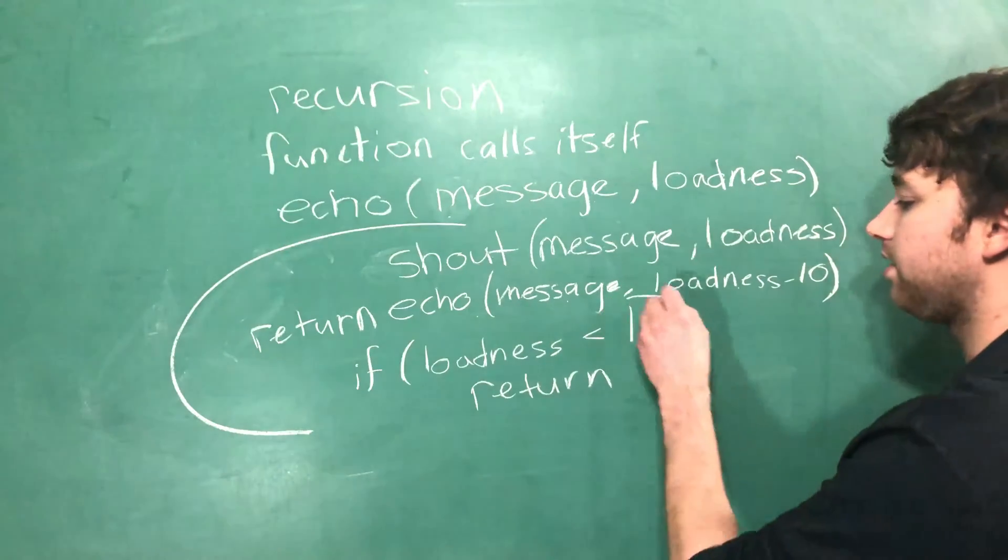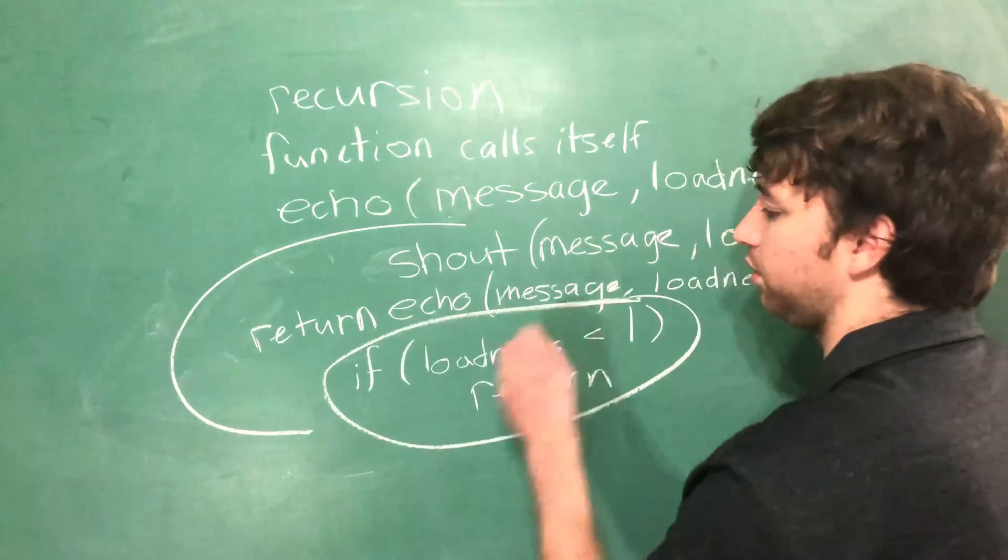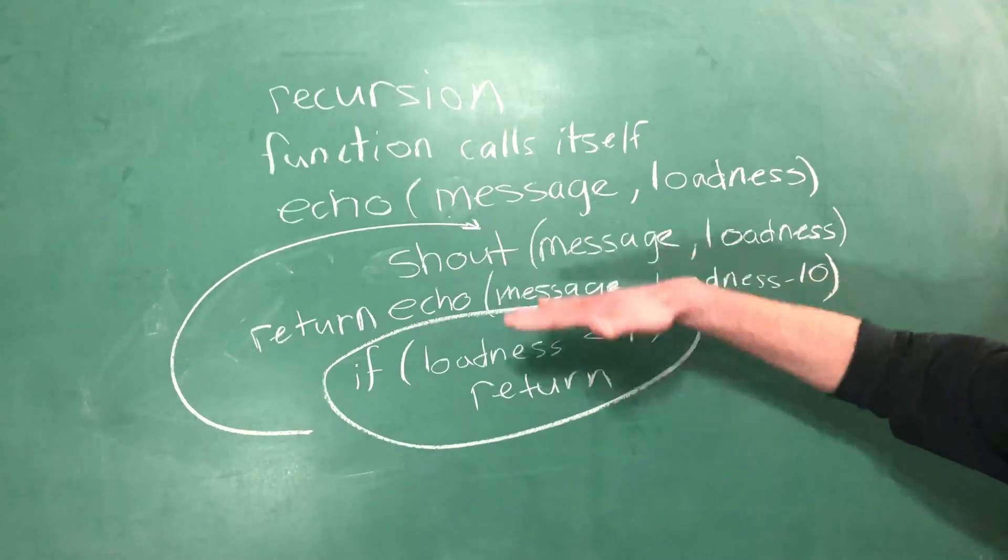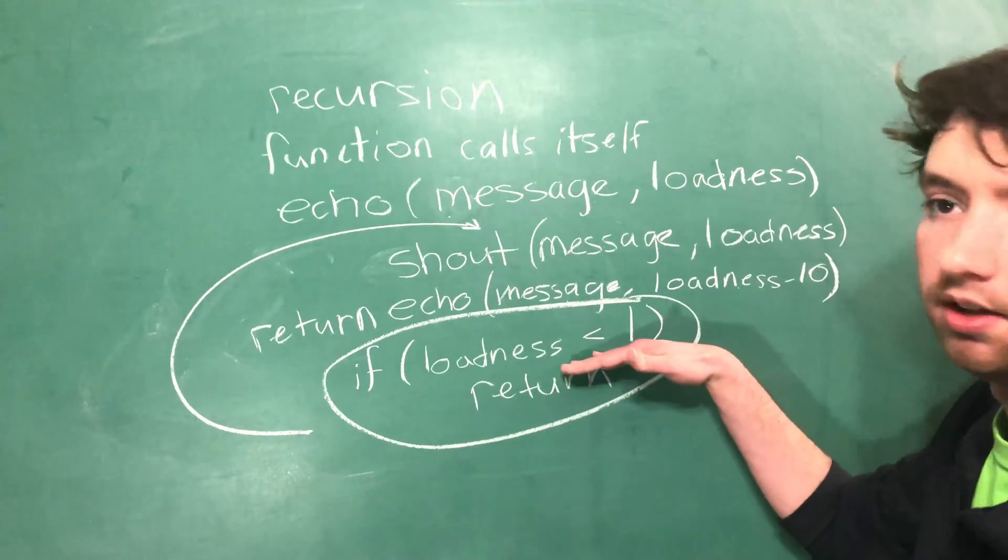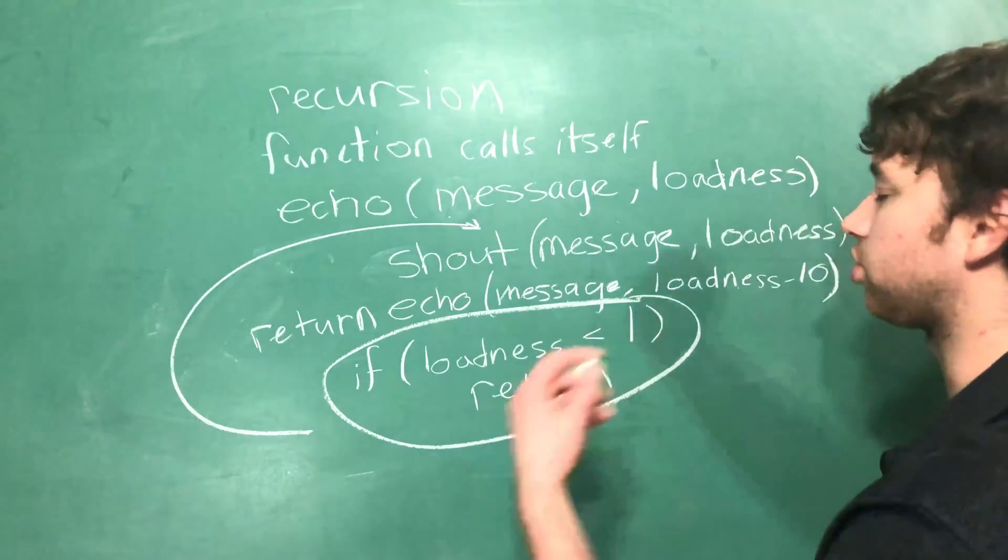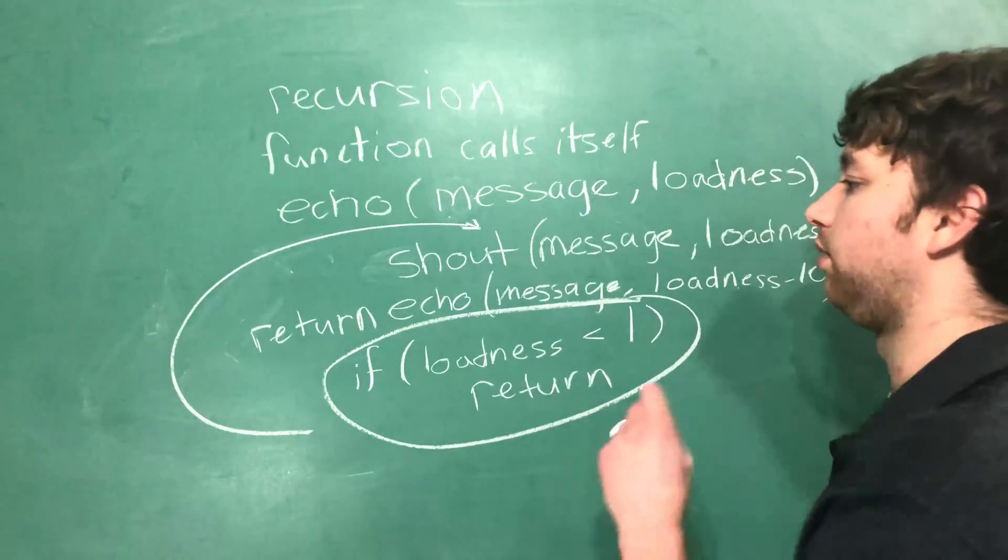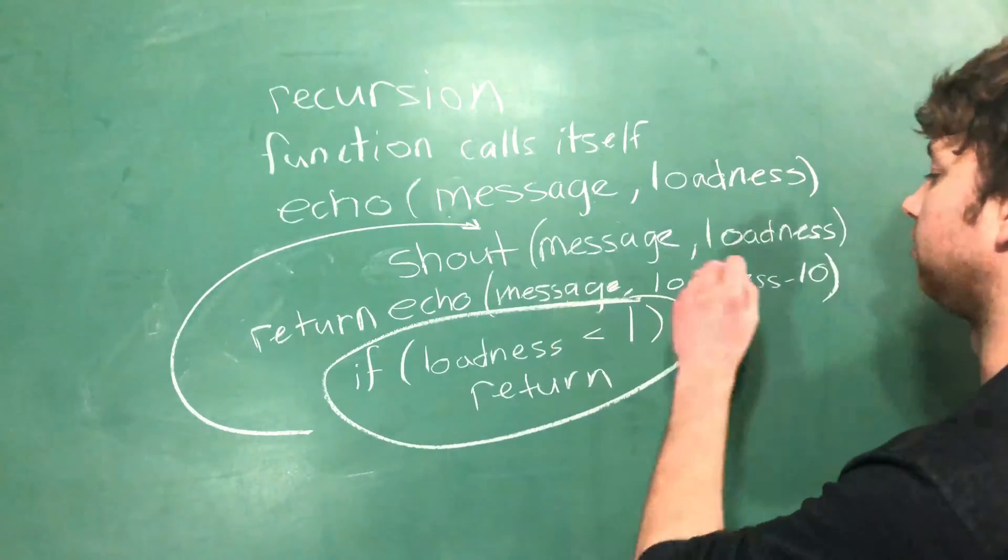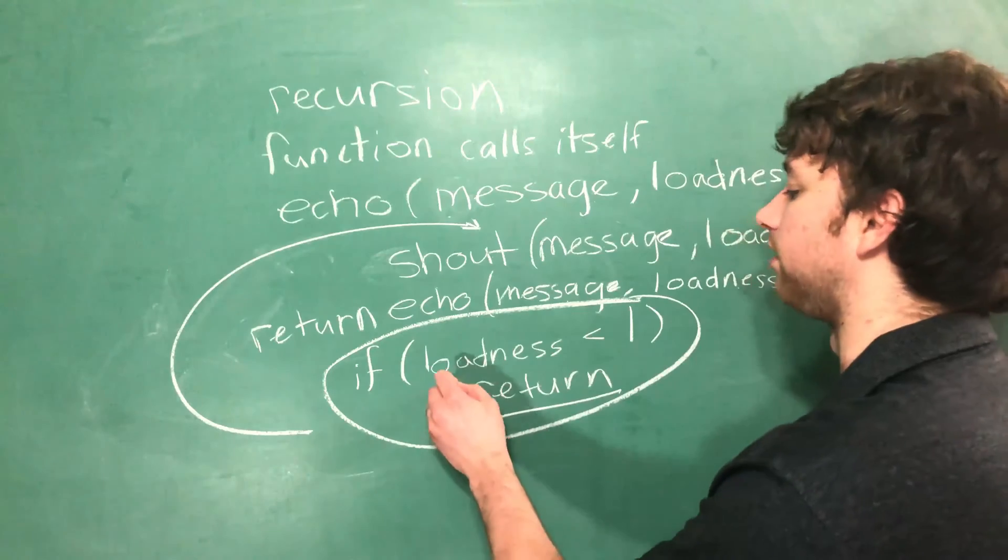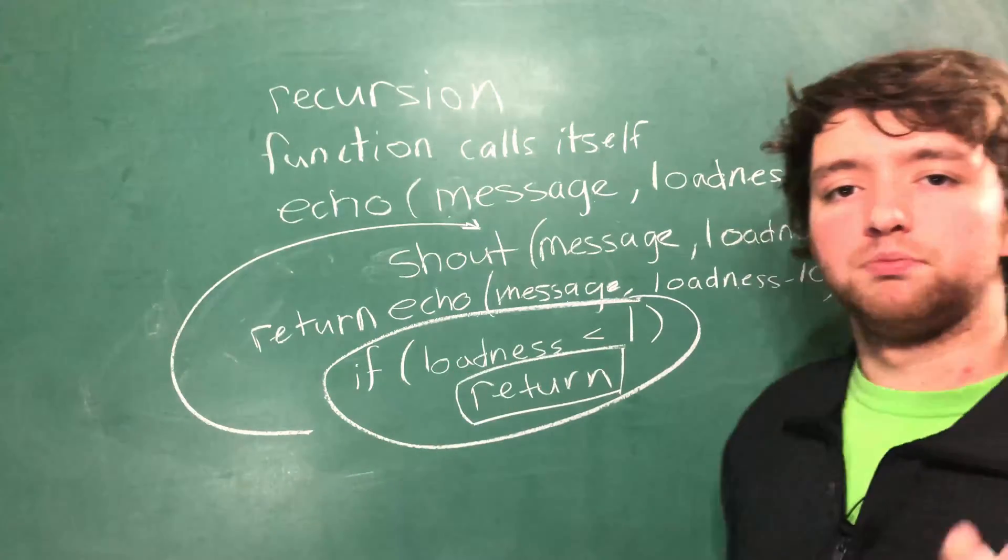So if we take this code and put it right here before the shout, it'll only get to this shout if loudness is greater than zero. That means we can't have the issue where we're calling shout with negative numbers. And we'll never get to this return echo loudness minus 10, because we already have hit a return for that function call. So that is the base case.